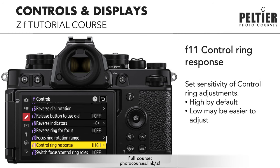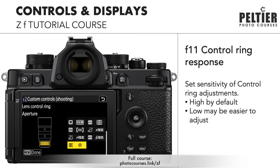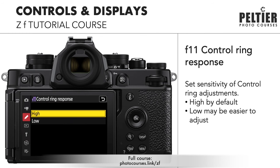F11, control ring response — that's for lenses that have a control ring. It's set to high by default, which I find makes the control ring a little too touchy and way too responsive. For the function I have assigned to it, which is aperture, it changes my aperture way too fast when I rotate that control ring, so I set this to low.